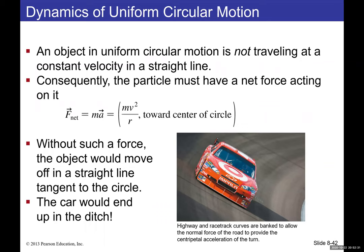An object in uniform circular motion is not traveling at constant velocity in a straight line, so there must be a net force pointing toward the center — the centripetal or radial force. This equals m · v² / r. Without this force the object moves in a straight line; with it, the object turns toward the center.